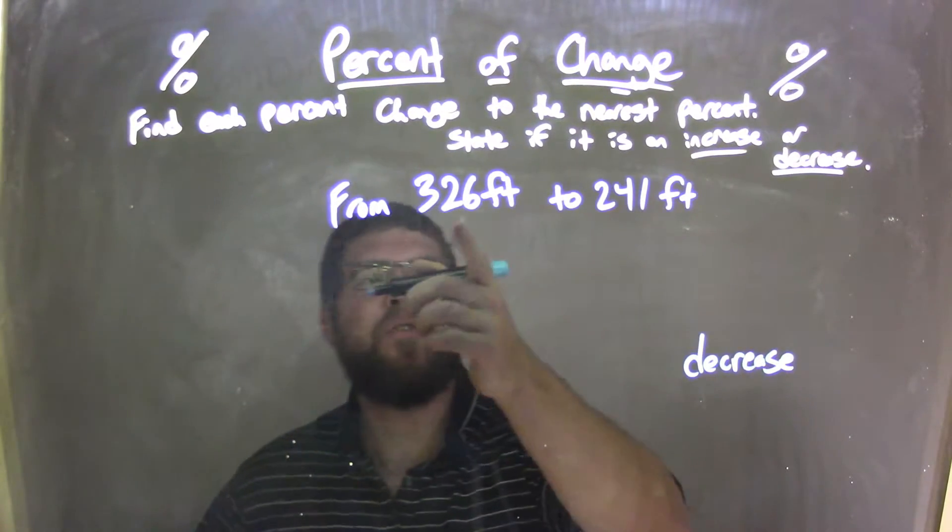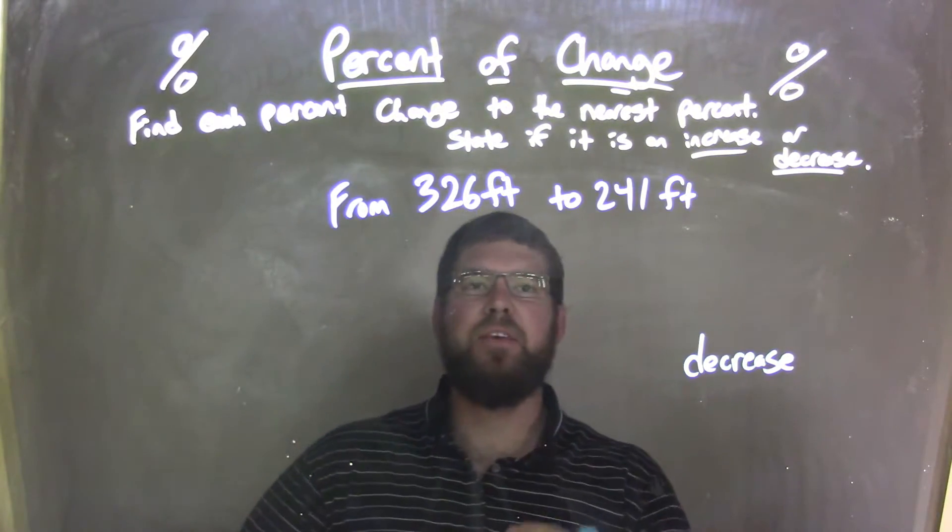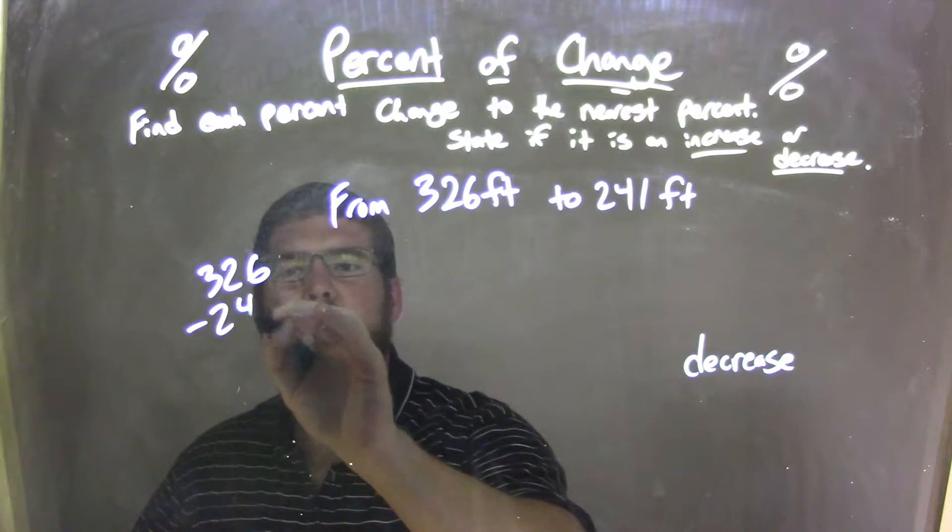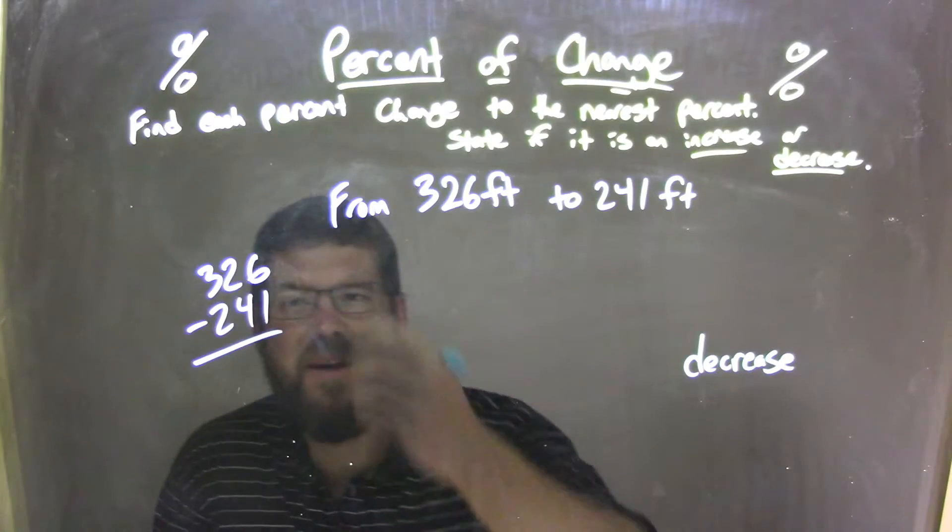What should I do with that now? I need to find the difference first between these two numbers, 326 minus 241. All right, so let's use this traditional method here.